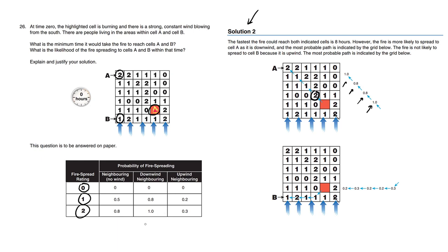And once we have a certain path, within eight hours, a very quick path, you simply multiply the probabilities to get the actual total probability of cell A catching on fire within that time.